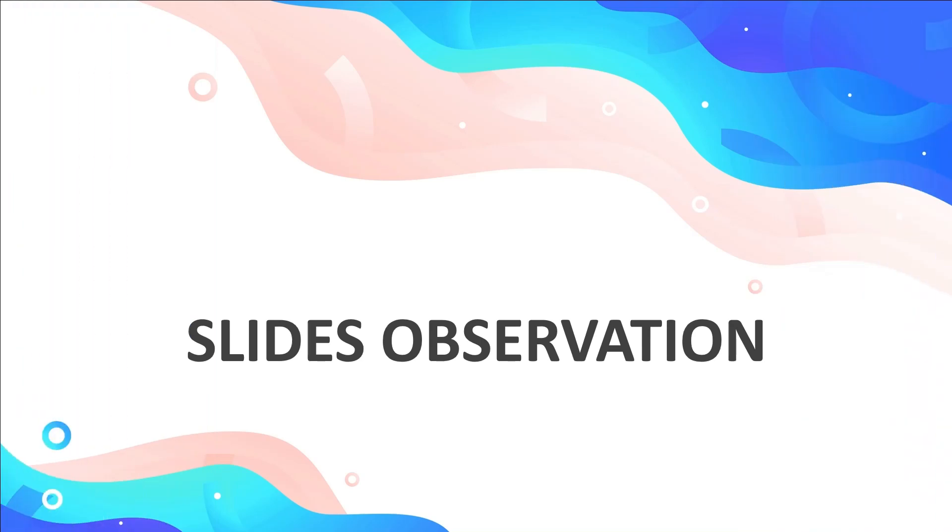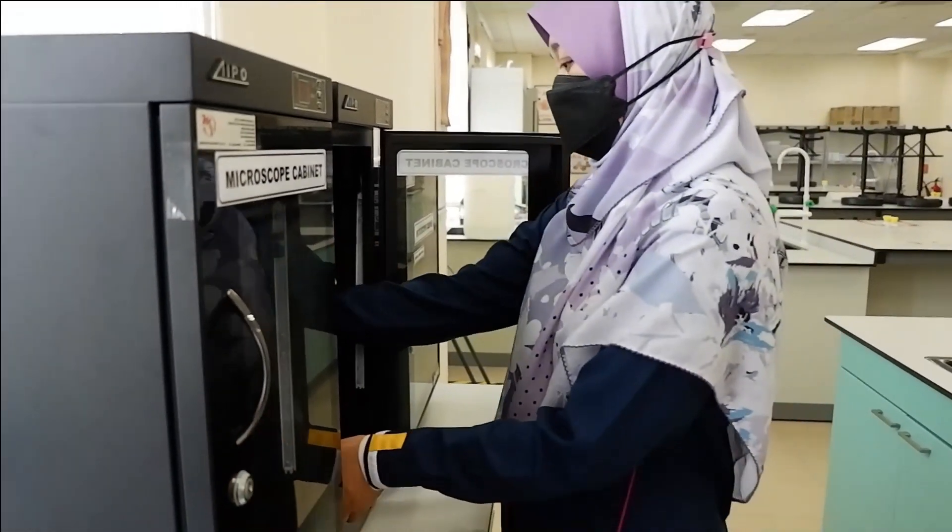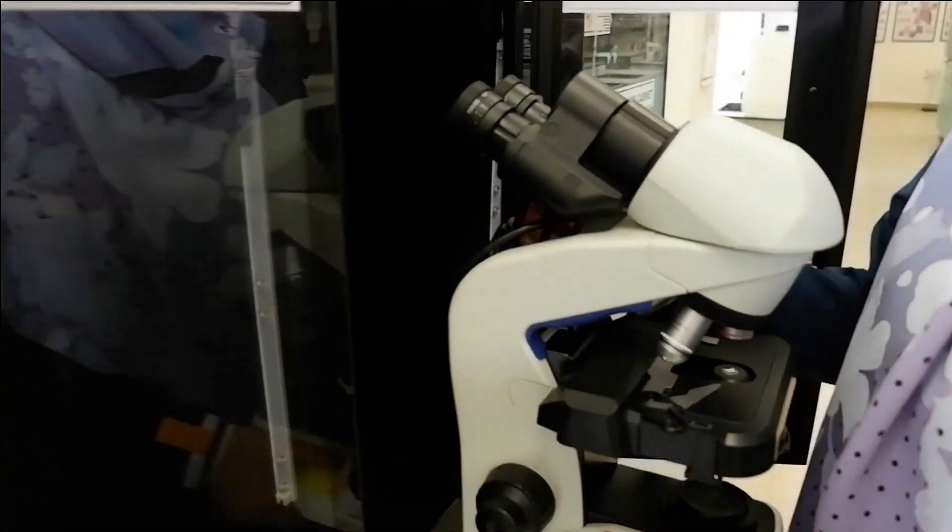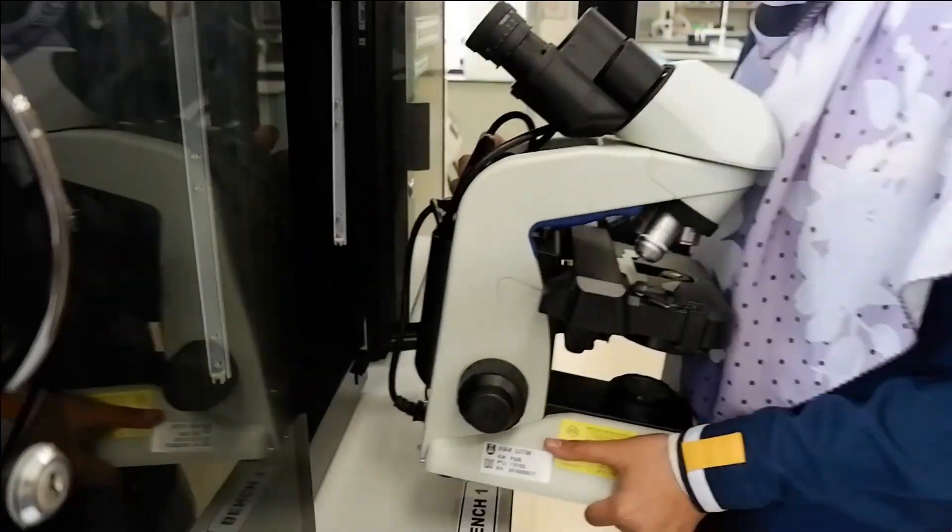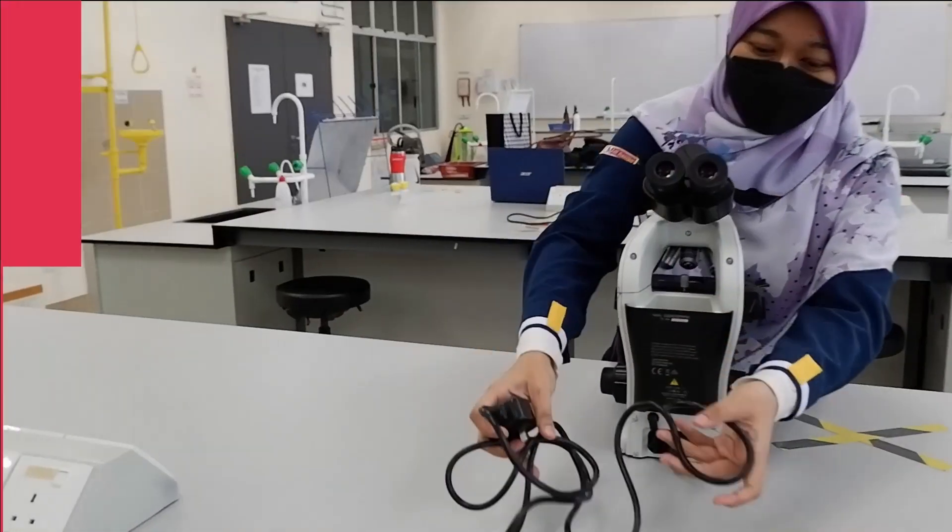Now let's continue with slide observation. You will learn the right way to use a microscope. So make sure to set 100 percent attention to the demonstration. We will use the plant cell as example. Microscopes usually are stored in a dry cabinet. If you need to get the microscope, be sure to hold it right.